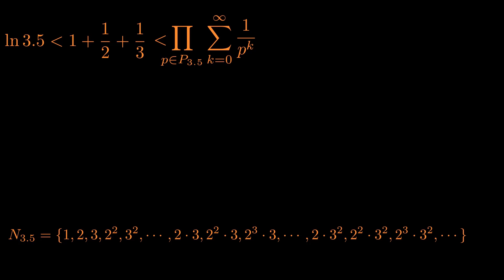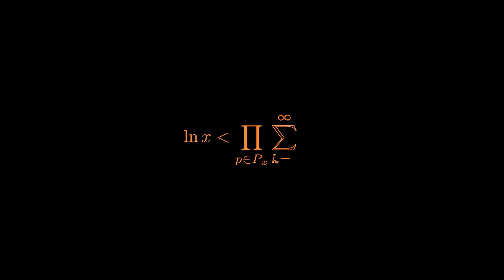So we have that the natural logarithm of 3.5 is less than the product over all primes in P subscript 3.5 of the series. It turns out for any x greater than or equal to 1, that inequality actually holds. So I wanted to keep this video short, so I guess I can leave this as an exercise for the viewer, or if you get stuck I'll try and add a drive link to the proof I wrote in the description.